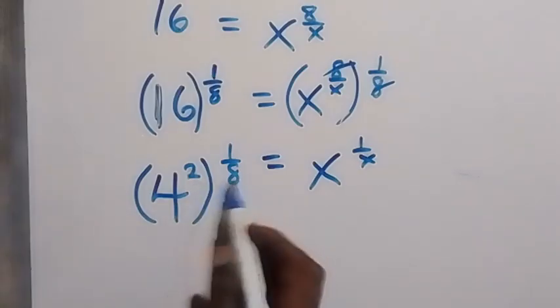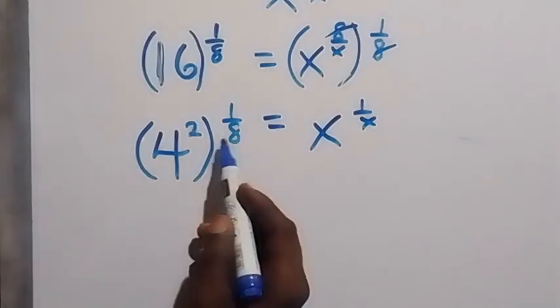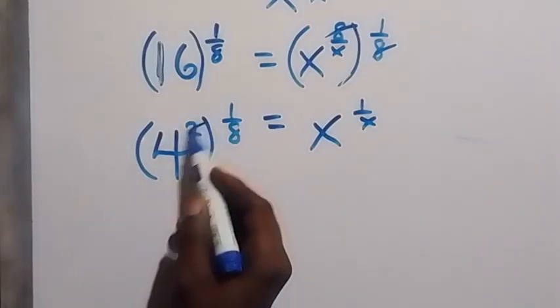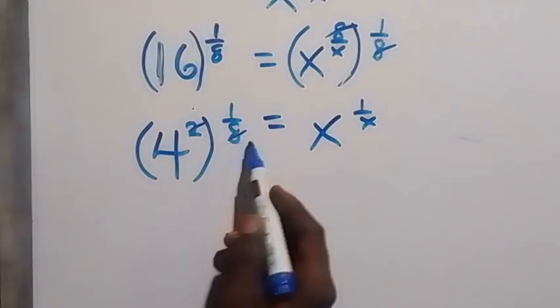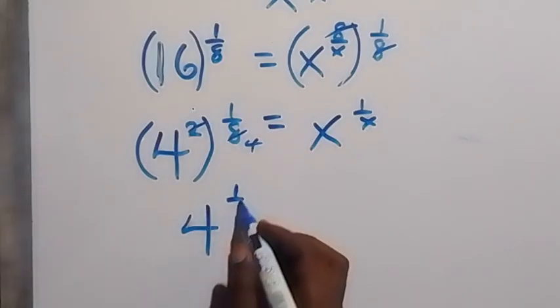And this power also multiplies each other. And from here, this will reduce to, because 2 will go here 1, 2 will go here 4. So this will reduce to 4 raised to the power of 1 over 4,